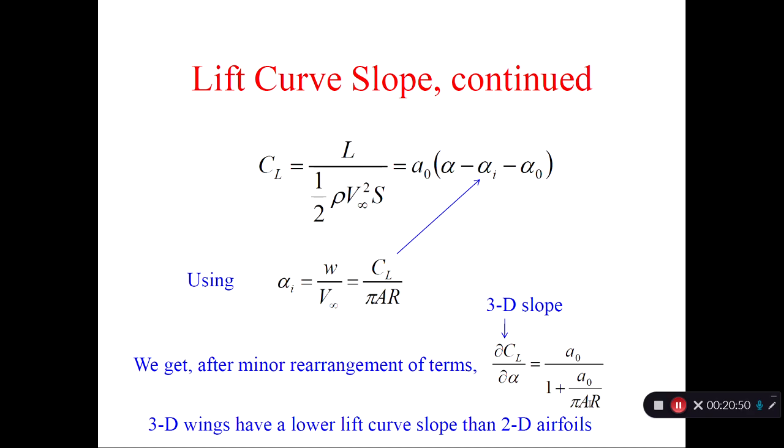The smaller the aspect ratio, the more the loss in the lift curve slope. So fighter airplanes, bombers will have a tiny aspect ratio, 3 to 5. General aviation aircraft may have an aspect ratio of 7 or 8. Boeing 7X7 may have an aspect ratio of 8 or 9. Gliders will have an aspect ratio of 20 or something very large. So the larger the aspect ratio, the smaller this number, the more you approach the 2D behavior.